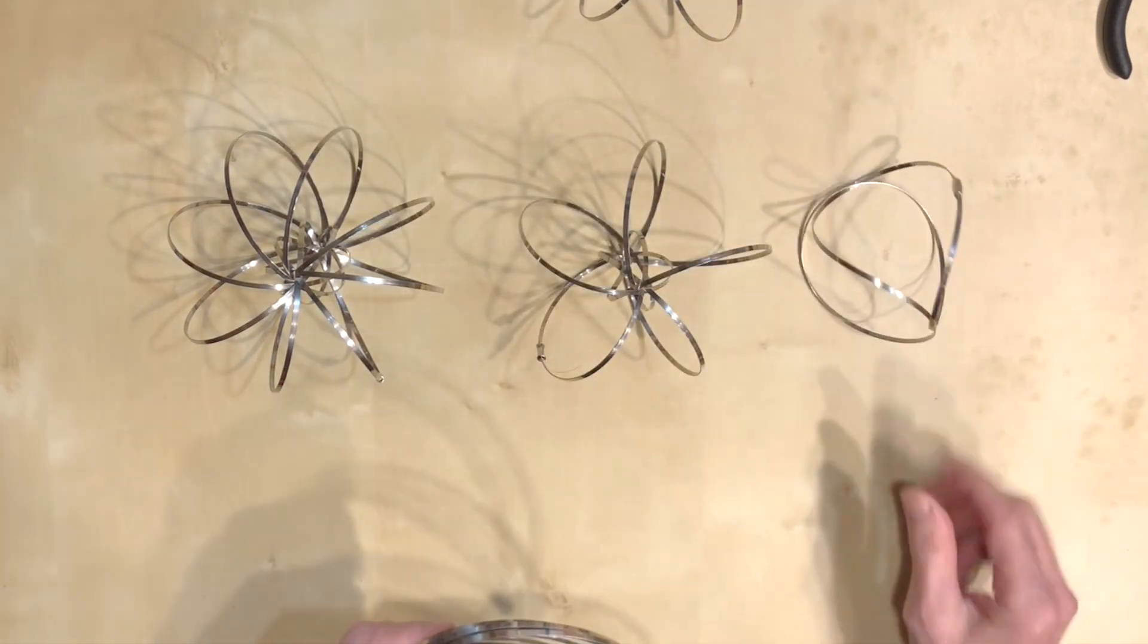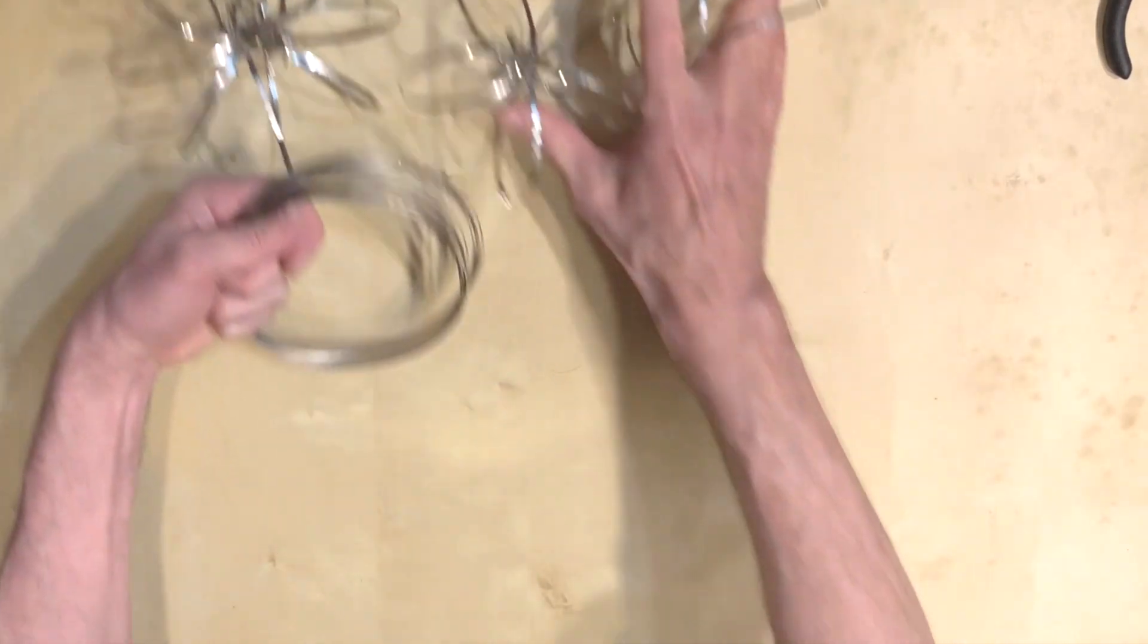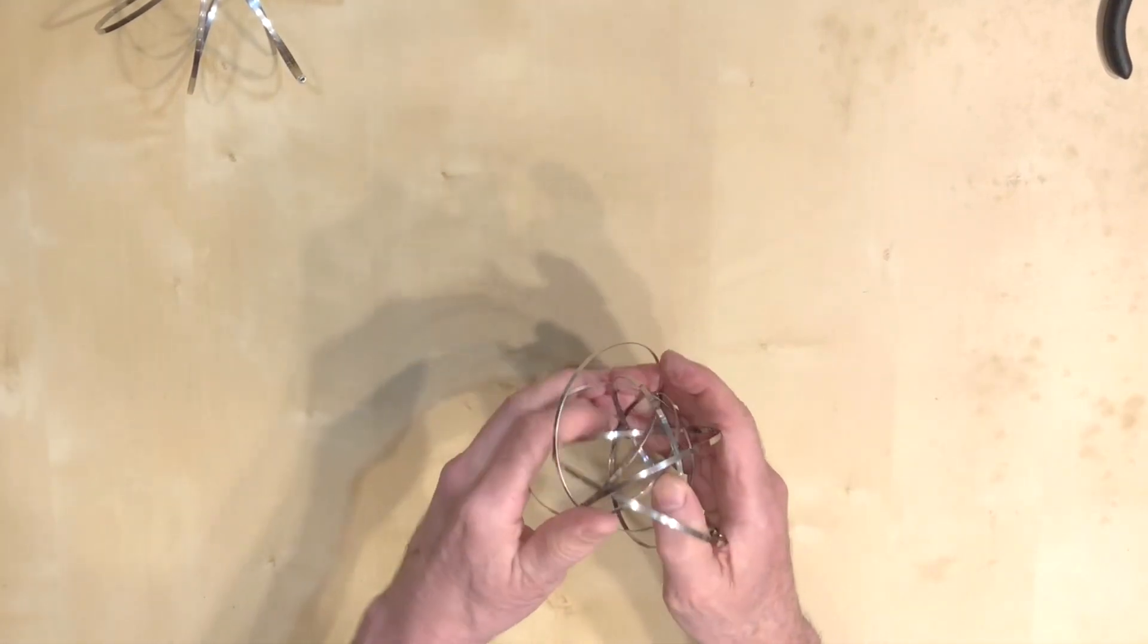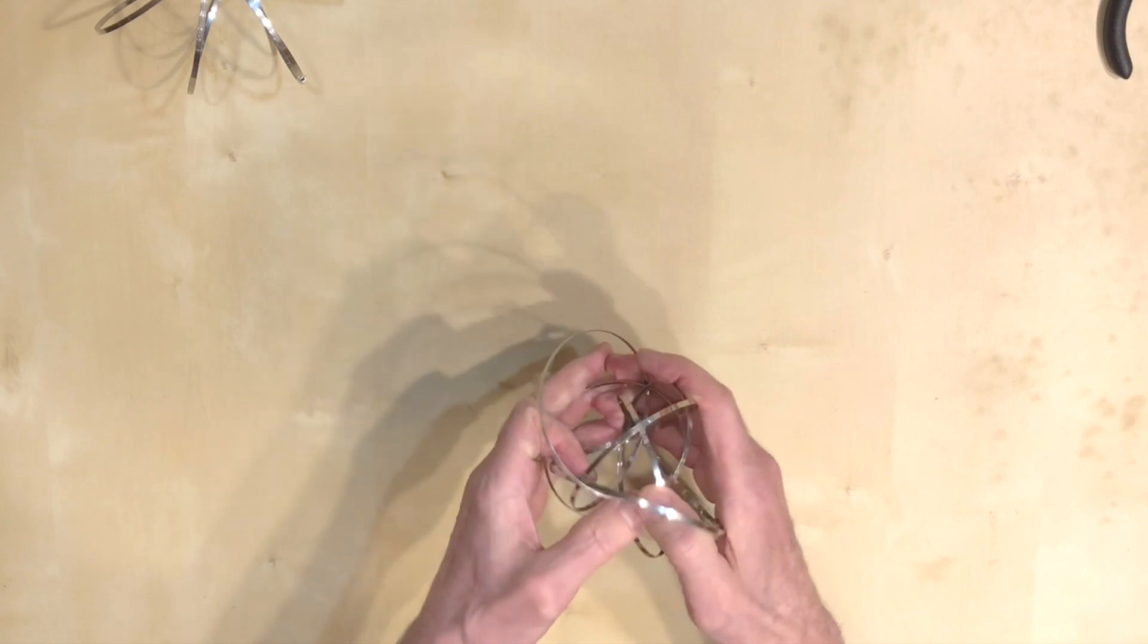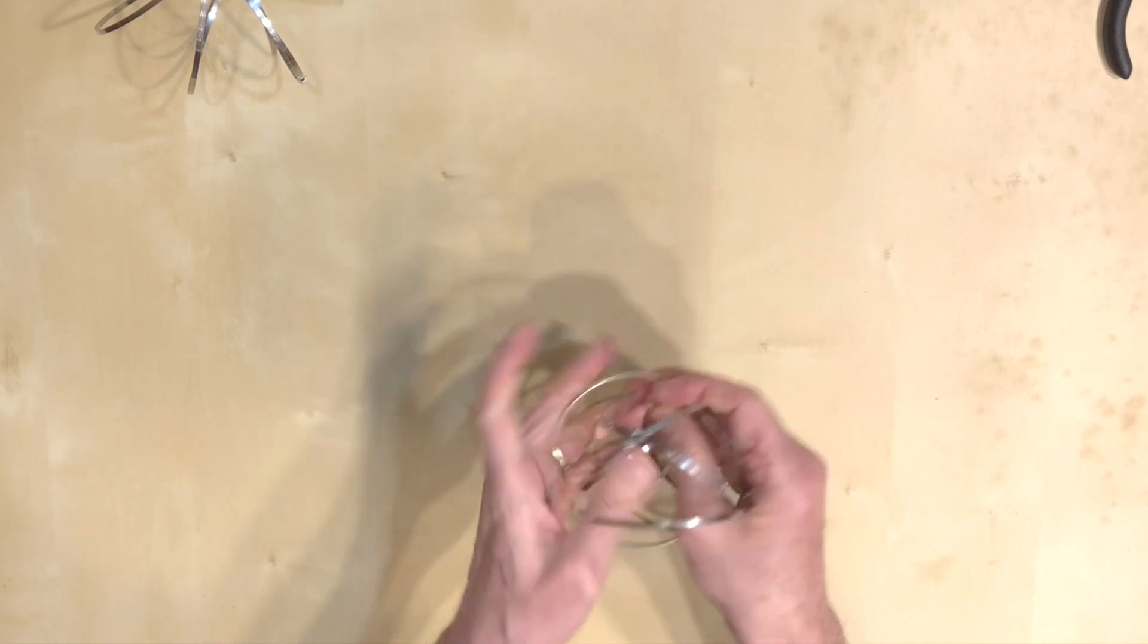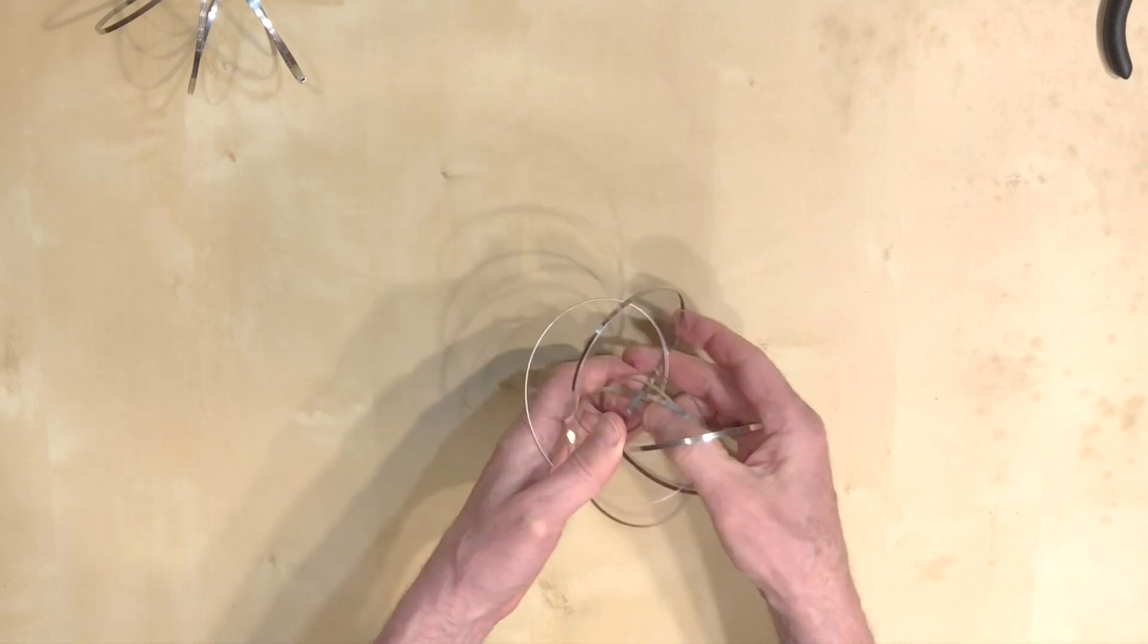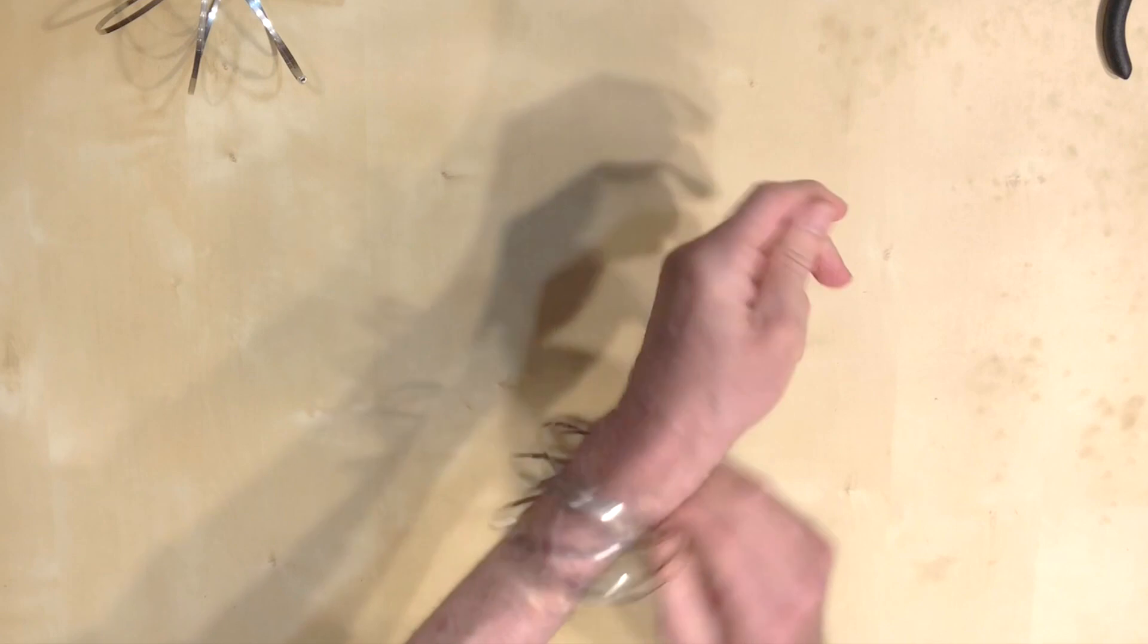They all have this property that they can be opened and they will spring back when released. You can use this to make, for example, a nice kinetic bracelet. This wire is too strong for a bracelet, but I make bracelets out of flat memory wire.